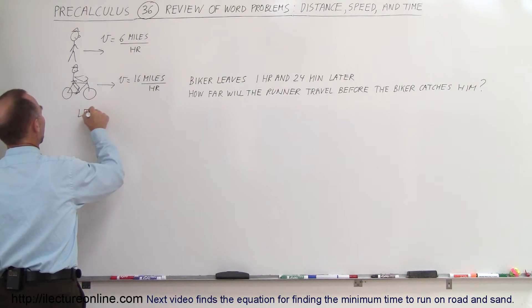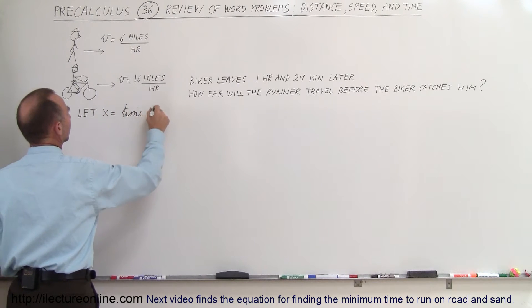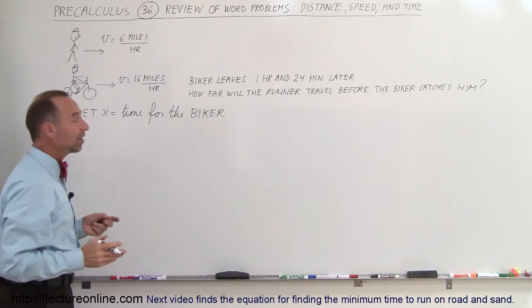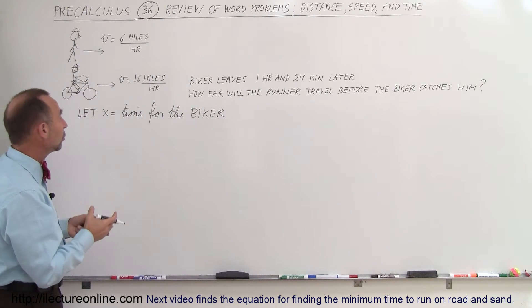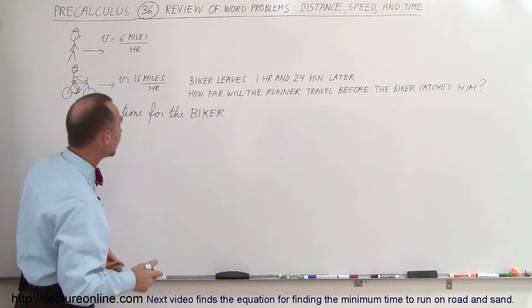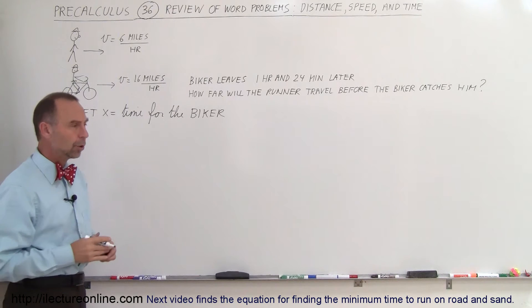So let x equal the time for the biker and then we have to represent the amount of time that the runner will be on the road. Well, since the biker leaves an hour and 24 minutes later, that means the runner will be an hour and 24 minutes longer on the road.